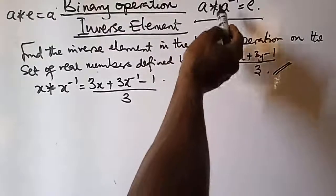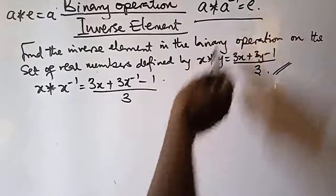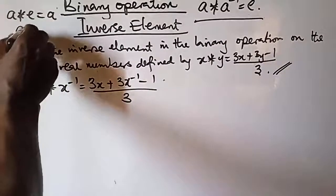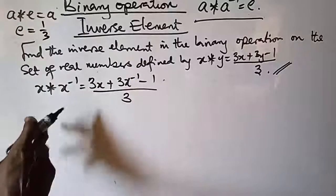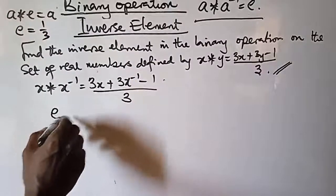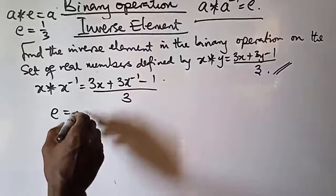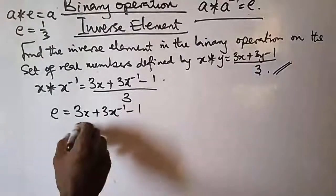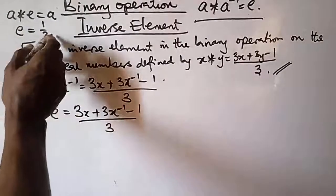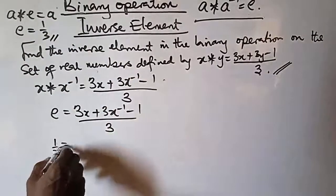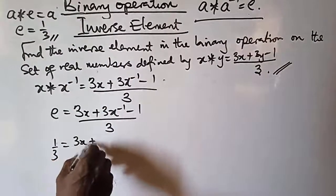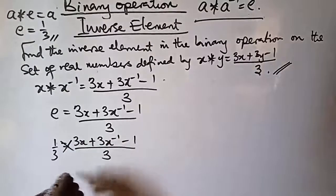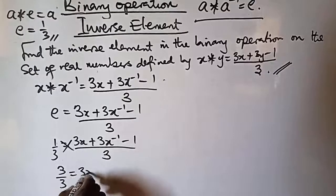From this rule, a operation the inverse of a gives you the identity element, and we know that e equals 1 over 3 from our earlier calculation. So here we know that 1 over 3 equals 3x plus 3(x inverse) minus 1, all over 3. Now let us cross multiply: 3 over 3 equals 3x plus 3(x inverse) minus 1.